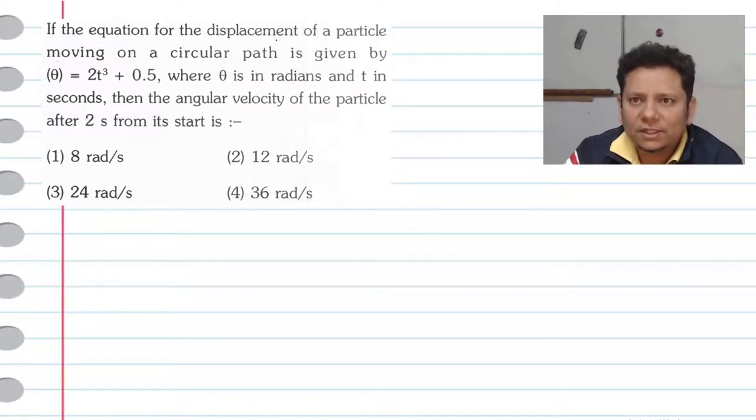Next question. The question says if the equation for the displacement of a particle moving on a circular path is given by theta equals 2t³ plus 0.5, where theta is in radians and t is in seconds, then the angular velocity of the particle after 2 seconds from its start will be.